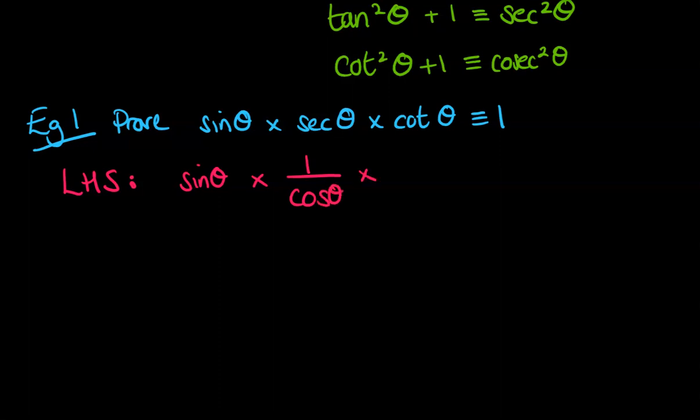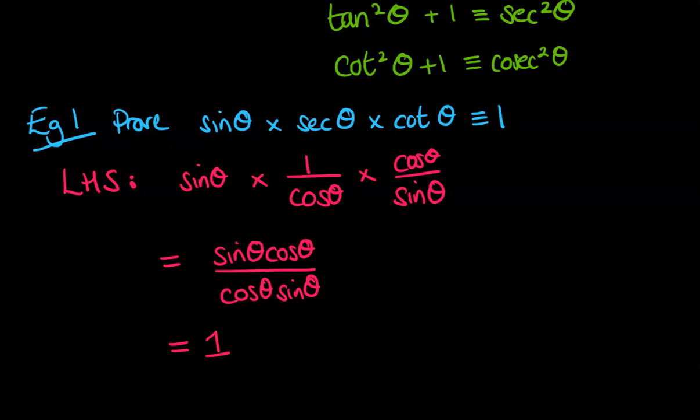And cot theta is 1 over tan theta, which is also, if tan was going to be sine over cos, then 1 over tan would be cos over sine. So we'll rewrite this like this. Now when we multiply fractions, we just times all of the tops by all of the bottoms like this. So we will end up with something that is the same on the top and the bottom, so that is equal to 1.